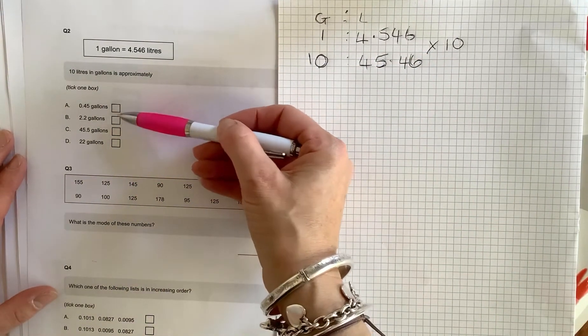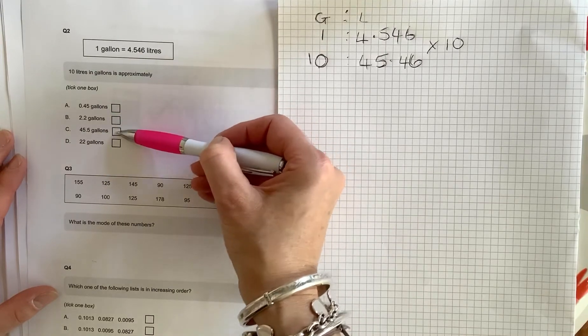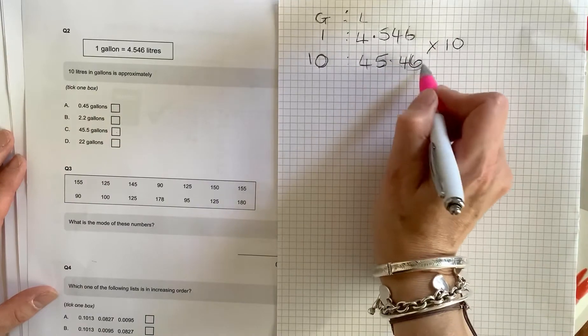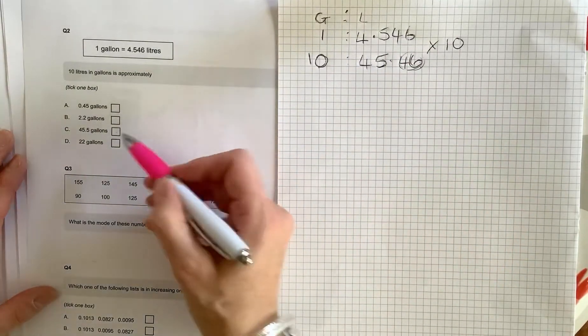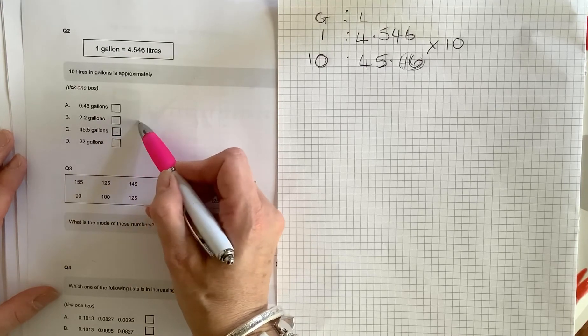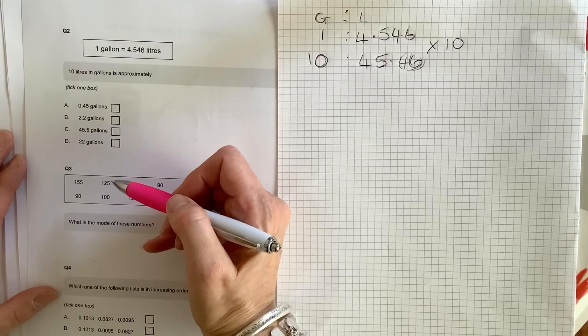Approximately... we want something that's approximately 45.46. 0.45, so no. No. 45.5. Well, they've rounded it up, haven't they? In this question, they've rounded this up to a 5. So for question 2, we would tick C there. Okay, so I'm just going to pause this and start again with the pen.